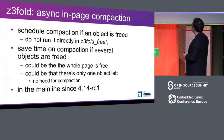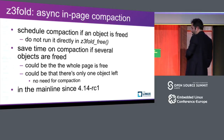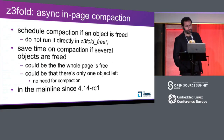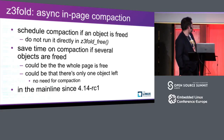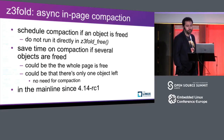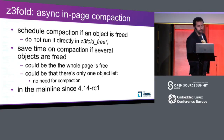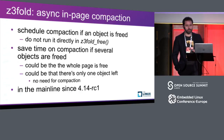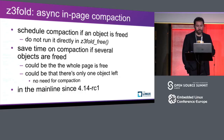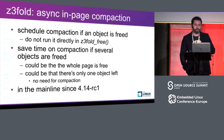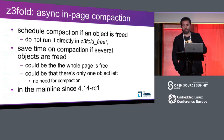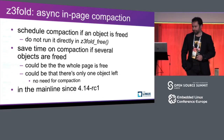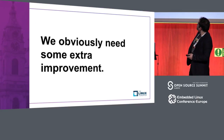Then came the async in-page compaction, which came into mainline very recently. The idea is that we just take the compaction off the Z3fold free function and schedule it. We're taking it off the hot path - that's one thing. And the other thing is that we may save time on compaction if several objects are freed at the same or almost the same time, because we do it just once instead of doing it every time after an object is released.